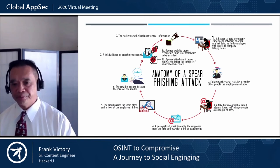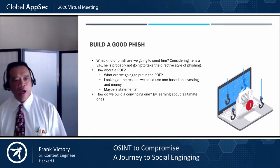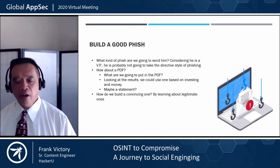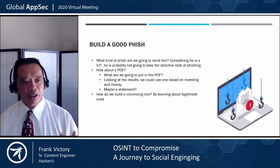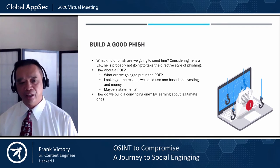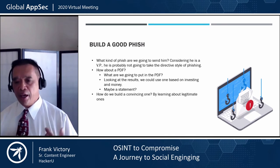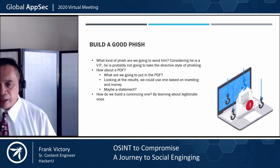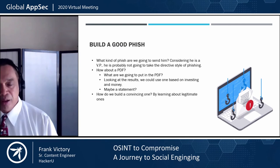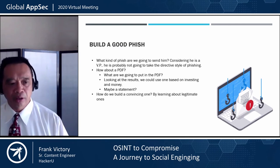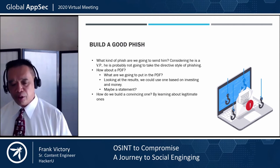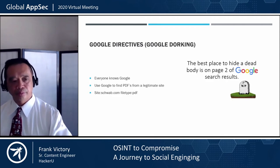Let's put that into practical use. How do we build a good fish? What kind of phish do we want to send to this person? From the social media we gathered, we can tell this person is a VP. He's probably not going to respond to a directive-style phish — he's going to be all about information he can use and consume. Maybe a statement. But how do we build a convincing one? How do we learn what kind of data this person would respond to? We use Google directives, or as I like to call them, Google dorking.